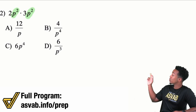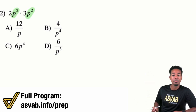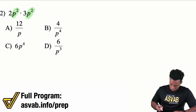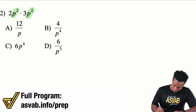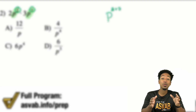That P squared and the other P squared are going to become P to the power of two plus two. So that's going to be P to the power of two plus two.